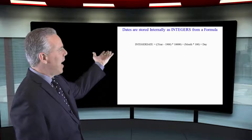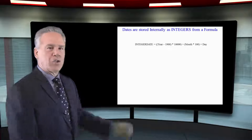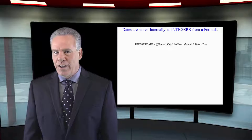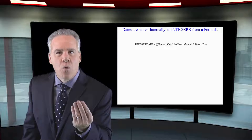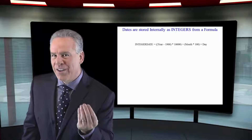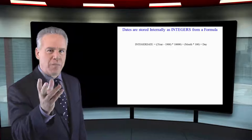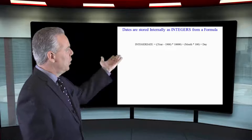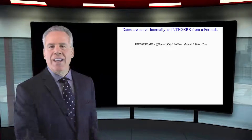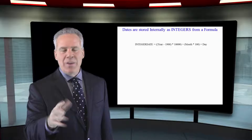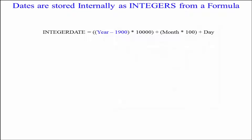Here we see how Teradata stores dates internally as a four-byte integer. They won't display them this way, but they have a little formula. The formula looks complex, but it's so simple. Let's take my birthday — January 10th, 1959.